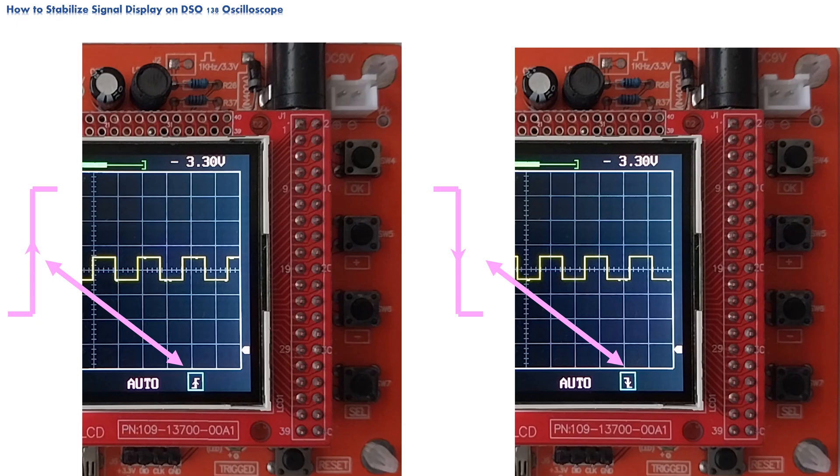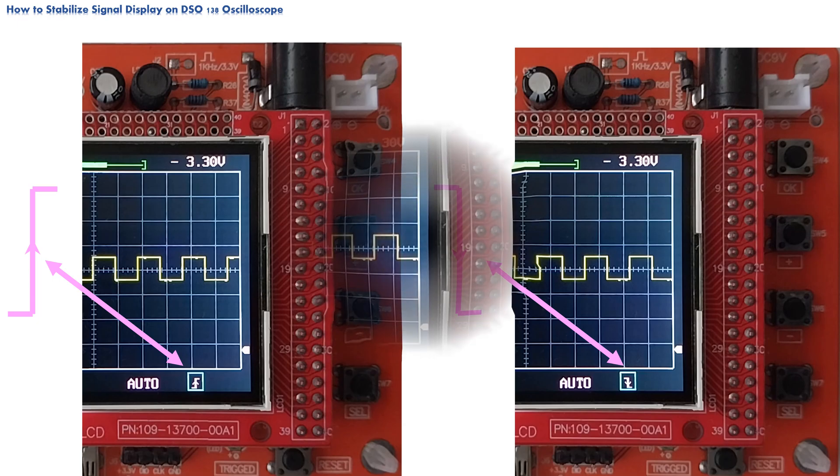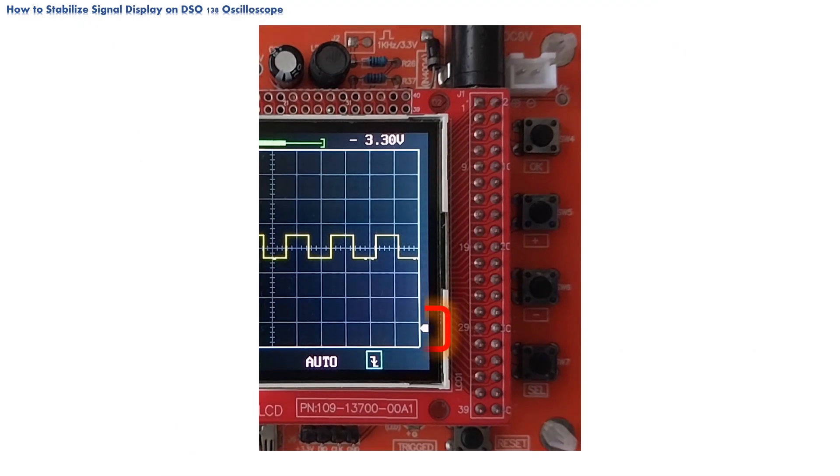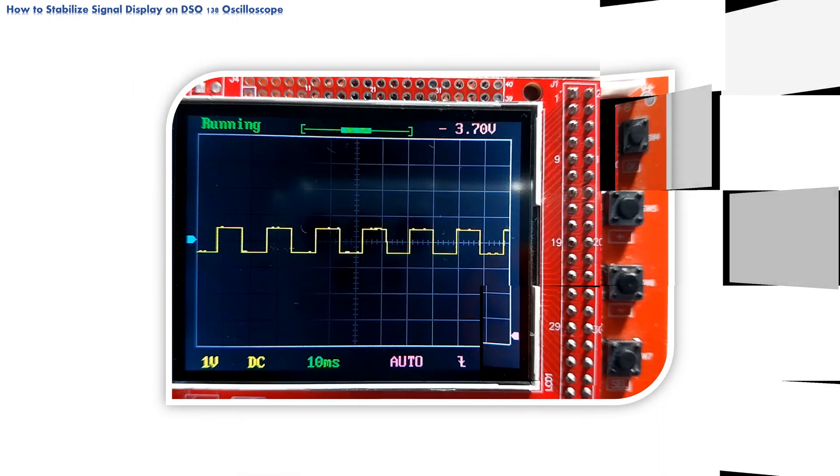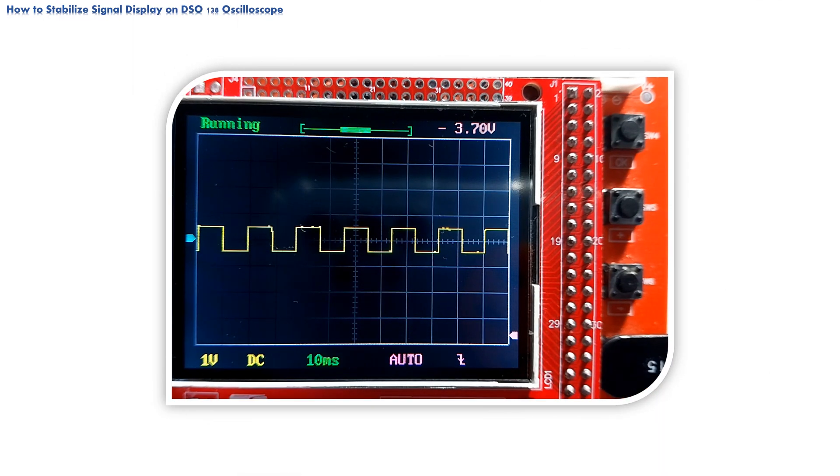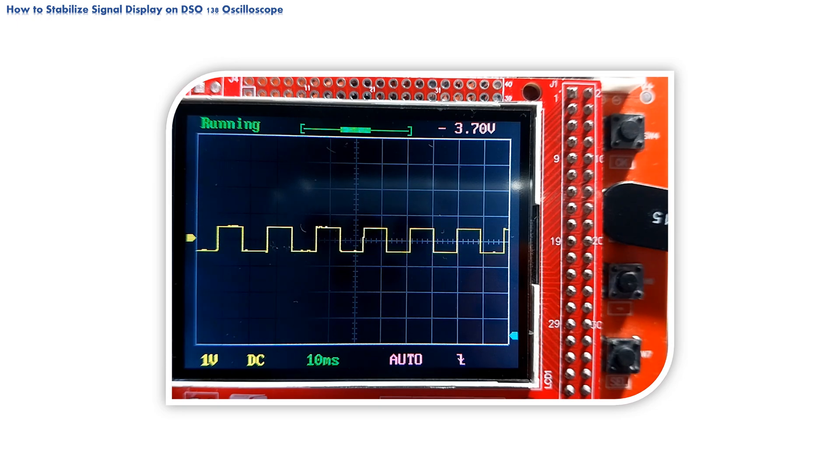This selection works in conjunction with another icon on the display. That is arrow pointer on the right-hand side of the screen. Using cell push button set focus on the arrow pointer icon. Use plus and minus push button to slide arrow pointer icon vertically, up or down, on the screen. Now, there are two scenarios how we can achieve signal stabilization using combination of the triggered icon and arrow pointer icon.